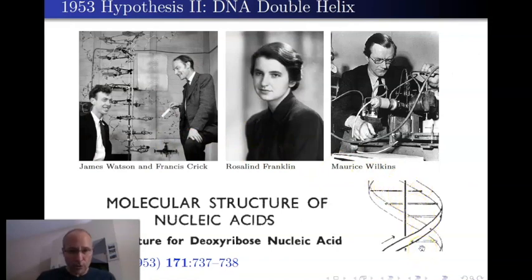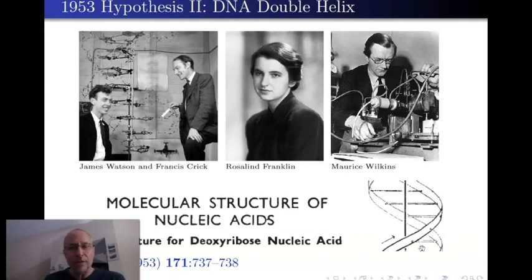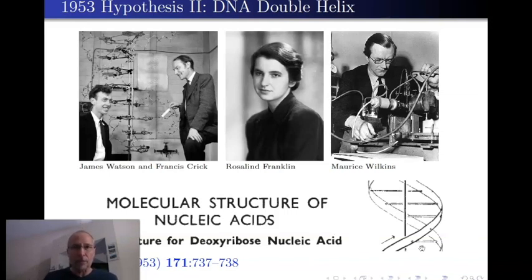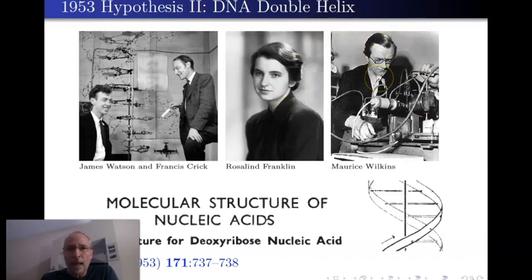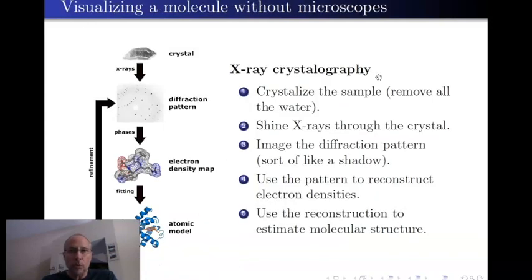Now compare that to Pauling's idea. In Pauling's idea, the bases stick out away from the center of the molecule. In the Watson-Crick-Franklin-Wilkins model, they all connect together in the middle. In 1953, they didn't know which hypothesis was correct. How do you figure this out if you can't actually see the molecule? There's no way to go with a microscope and look at this molecule — not in 1953, and even now we barely have the technology. That's where Franklin and Wilkins come in. They had a way of visualizing the molecule without using microscopes.